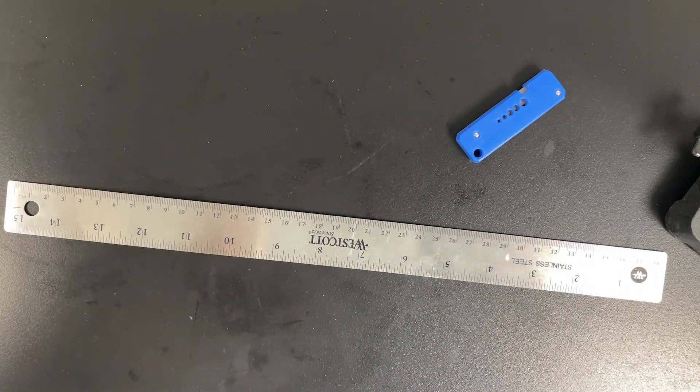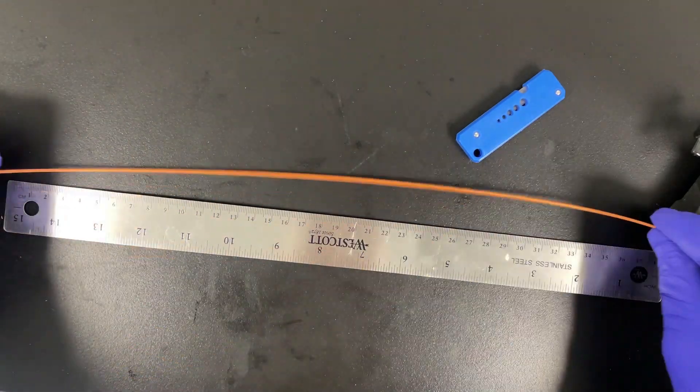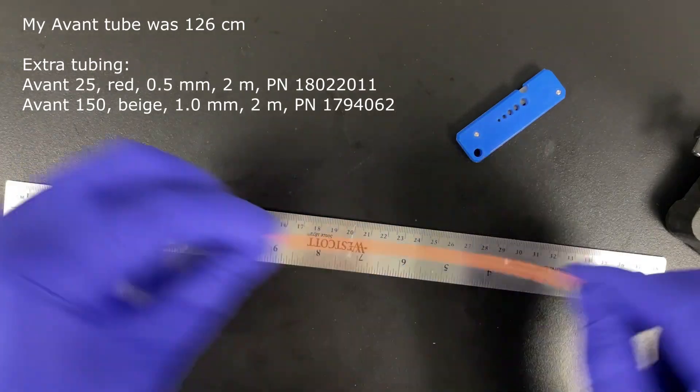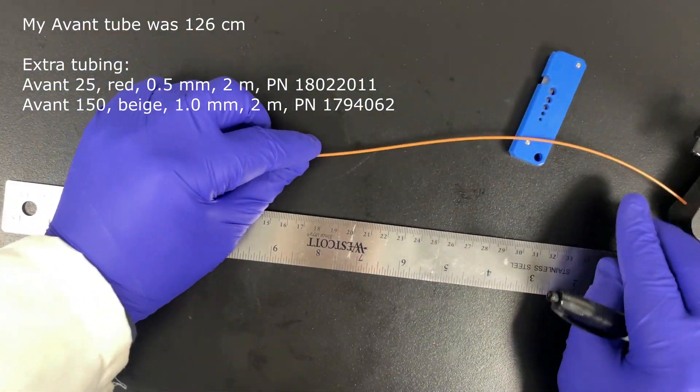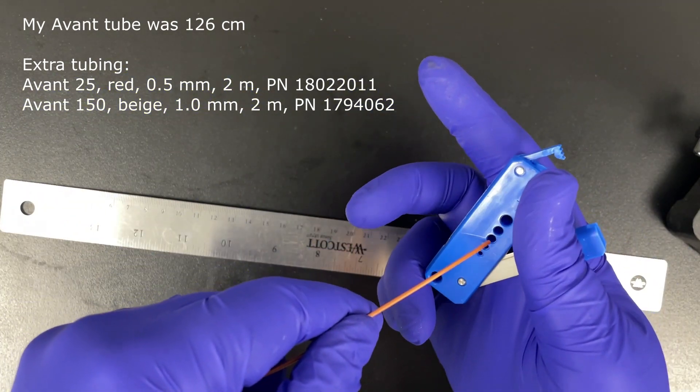Measure out the length of old tubing and cut the new tubing to the same length. You can use a length that is a little different so long as you allow the Fraction Collector arm to move properly and you reset the delay volume. The tubing I had measured 126 centimeters.